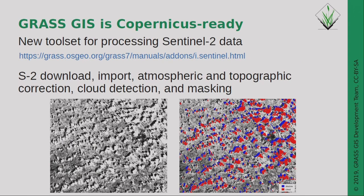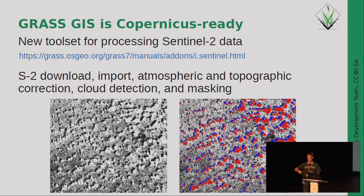Talking about Sentinel again: we say that GRASS is now Copernicus ready. We have a toolset of Sentinel modules available. They include download of data — you specify your bounding box or computational region, query what data are available with a maximum cloud amount and time range, see the list, and then download. This also works for Sentinel-1 data. For Sentinel-2 especially, we have the import function — you bulk import everything with a single line, and it creates the time-space registration, allowing you to compute NDVI over time or maximum NDVI in a season.